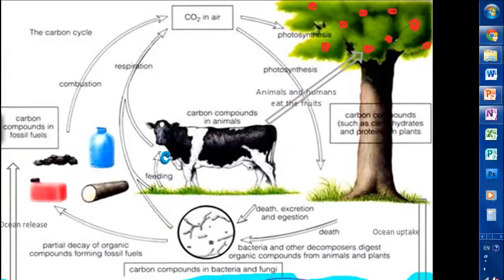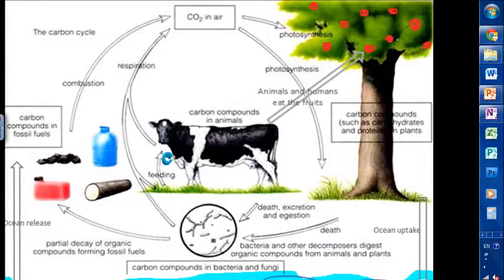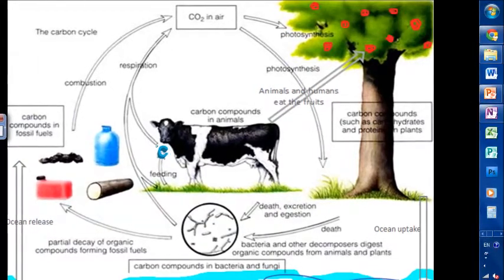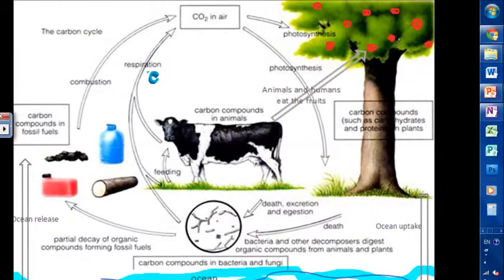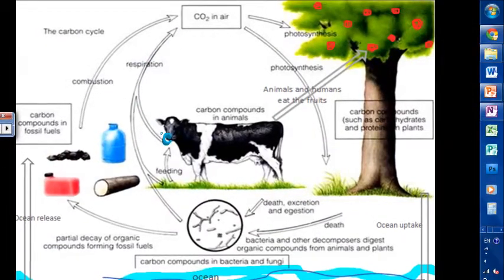Larger animals could eat the smaller animals and the carbon would go into the larger animals' bodies. The respiration of plants and animals results in carbon dioxide being released into the atmosphere.